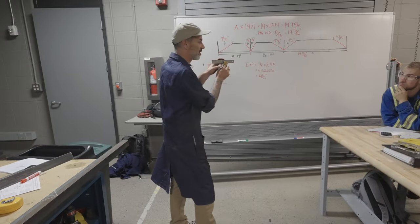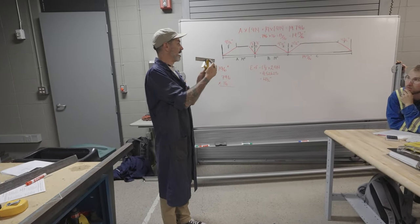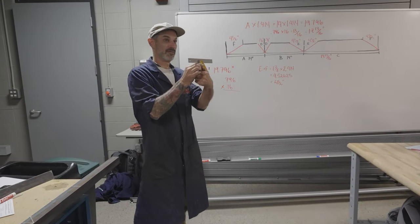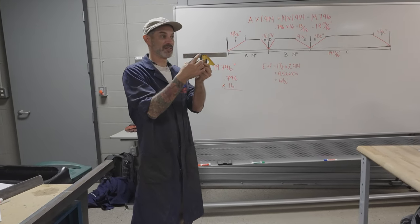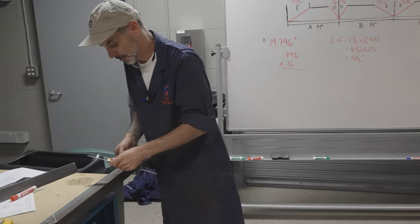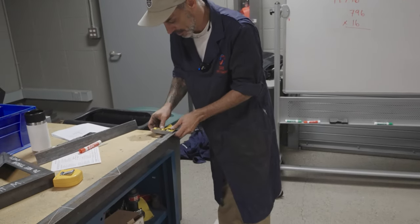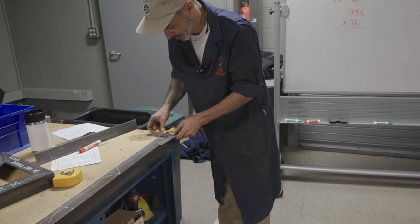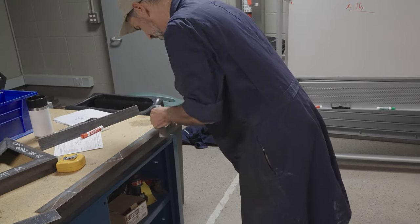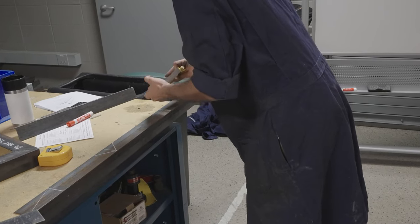Darcy's got this set up — he's got it marked now. Four and a half inches off of here, four and a half inches off of here on the other side. I've already made my line there, so now I can set this.